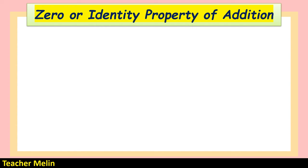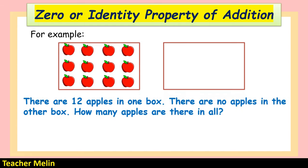Let's begin with the first property: the zero or identity property of addition. Look at the picture. There are 12 apples in one box and no apples in the other box. How many apples are there in all? The number sentence is 12 plus 0 equals 12. So the answer is 12.